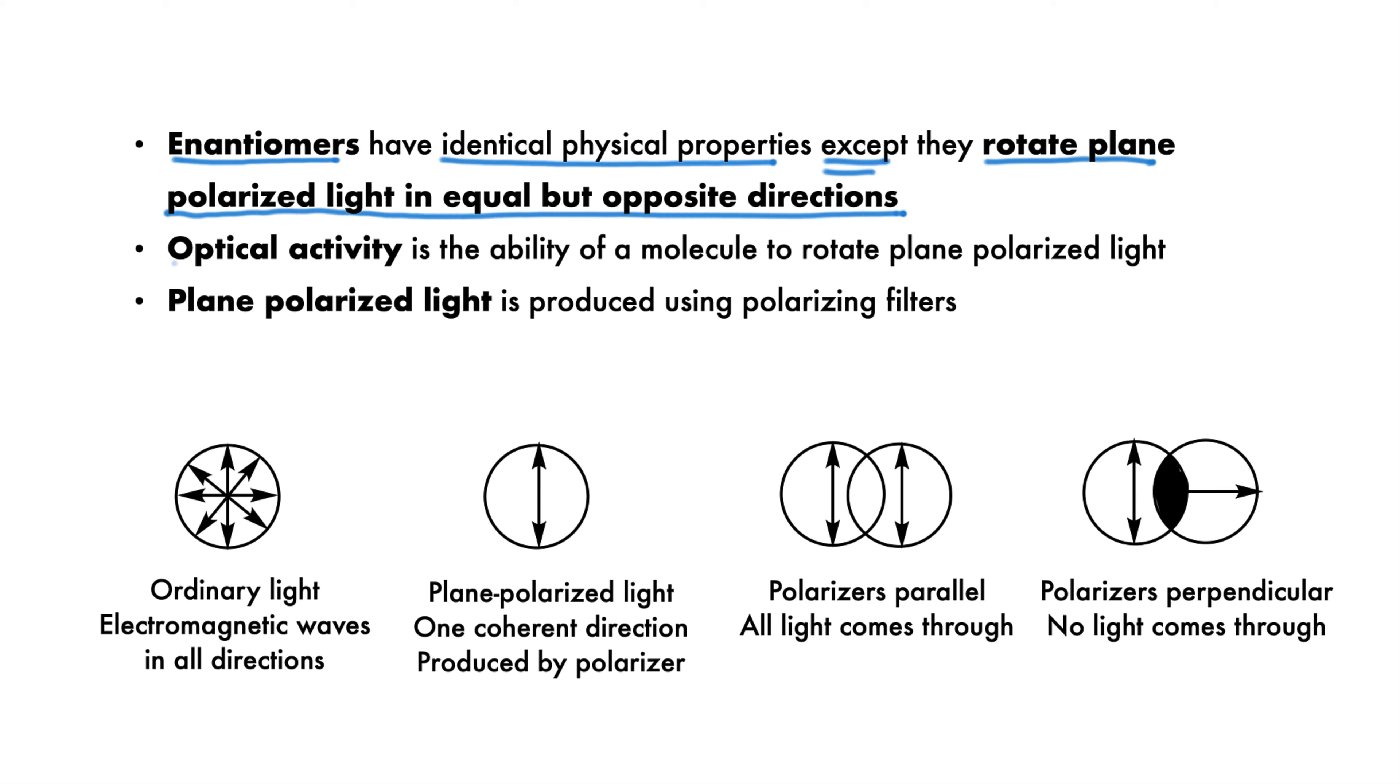Optical activity is the ability of a molecule to rotate plane-polarized light. What is plane-polarized light? It's produced when you pass ordinary light through a polarizing filter. Ordinary light has electromagnetic waves propagating in all directions. When you use a polarizer, only one coherent direction of light is allowed through. In this case, only vertical light waves are allowed.